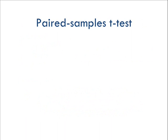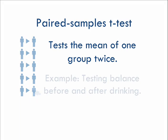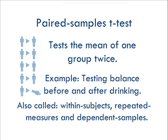Another type is the paired-samples t-test. This is when we have one group measured at two different times. For example, we could test the Guinness quality control team's balance before and after they test their batches of beer. In a paired-samples t-test, each score is paired with another score, usually because the measurements come from the same subject. This gives us more statistical power as it reduces variability between subjects. However, it's also susceptible to ordering effects. They're also called within-subjects, repeated-measures, or dependent-samples t-tests — all meaning the same thing.